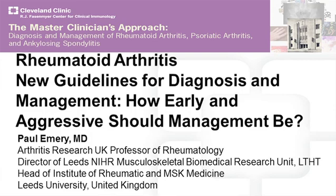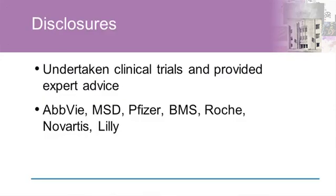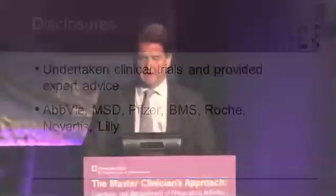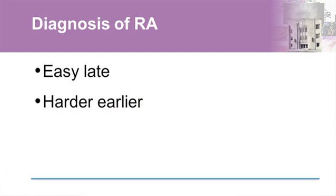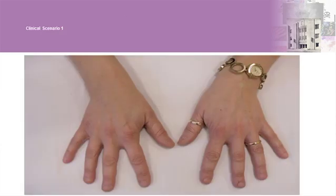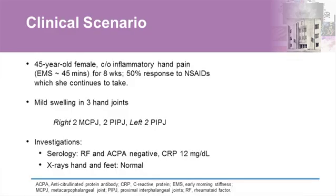This talk covers the diagnosis and management of rheumatoid arthritis, a field that has advanced hugely recently. The diagnosis is fairly straightforward if you're not interested in diagnosing rheumatoid early, but if you are — and now we're interested in diagnosing before arthritis is established — it becomes increasingly difficult. I took pictures of consecutive patients in our early arthritis clinic, and this one illustrates the point.